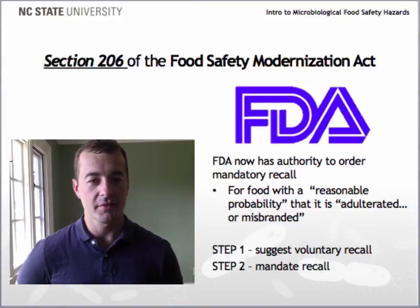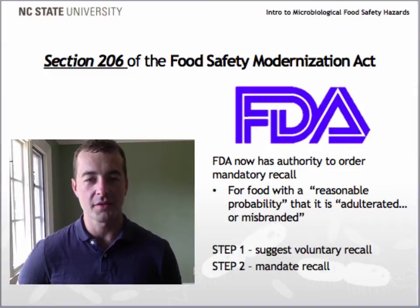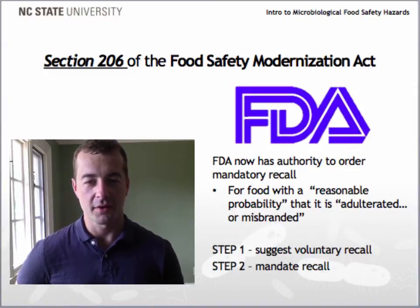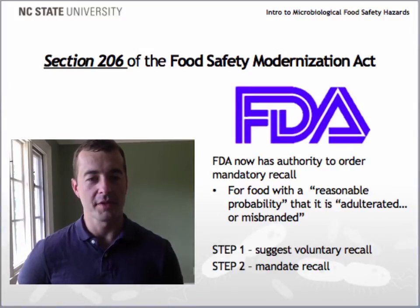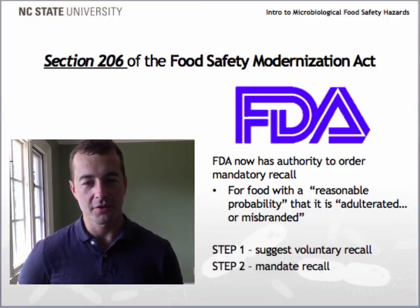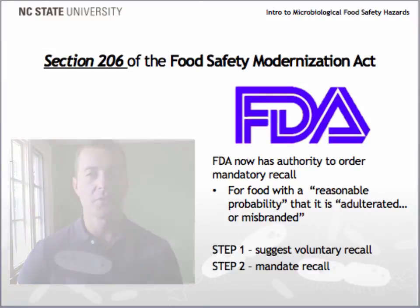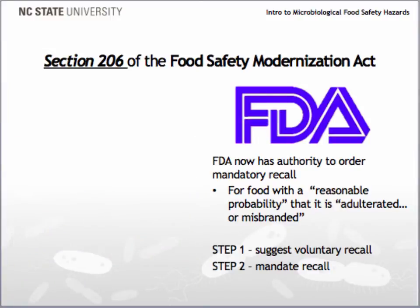On January 4th of 2011, Congress enacted the Food Safety Modernization Act. Section 206 significantly expanded the FDA's enforcement powers over potentially dangerous foods. Under the new law, FDA now has the authority to order the mandatory recall of foods for which there is a reasonable probability that the articles are adulterated or misbranded and the use or exposure to such articles will cause adverse health consequences or death to humans or animals.